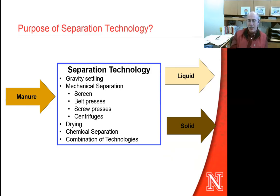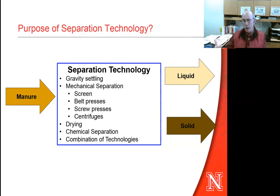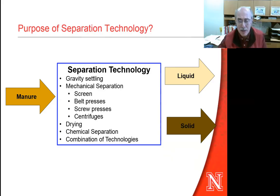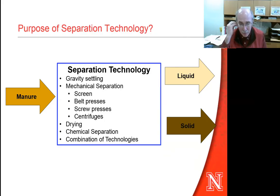We typically talk a lot about the technology and its performance, but I would encourage us to think also in terms of what is the end product that we desire. The liquid and solid co-products coming out of that separation should be an important consideration, because in many cases that may define the type of separation technology that will be most valuable to us. It's not like there is one technology that's always going to work in all situations.